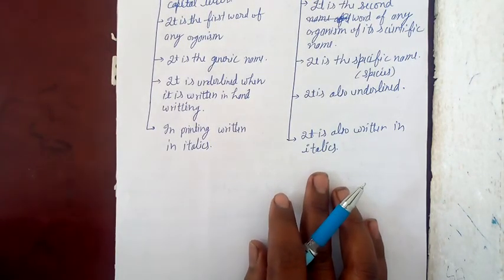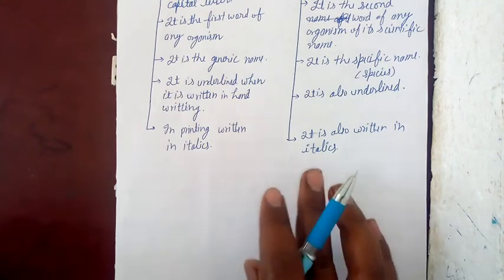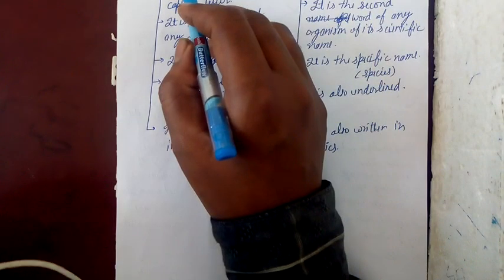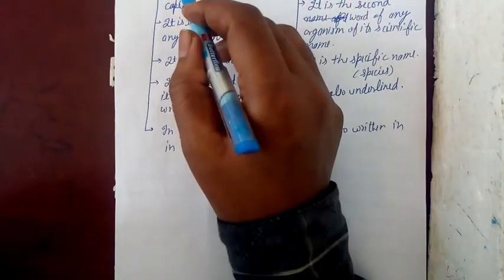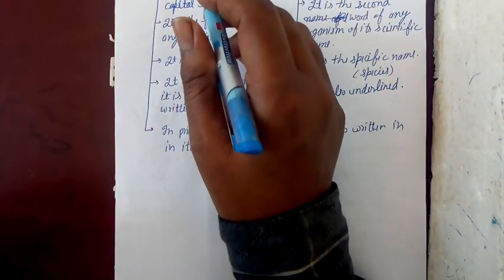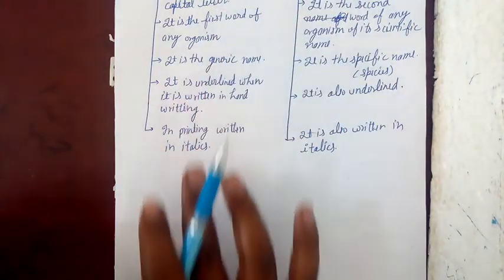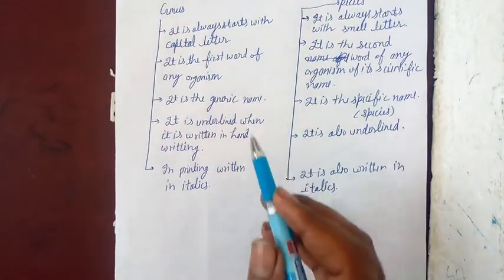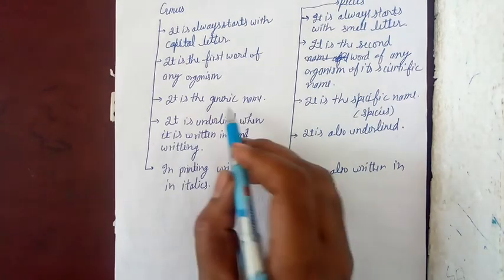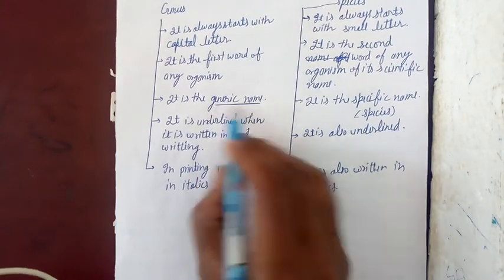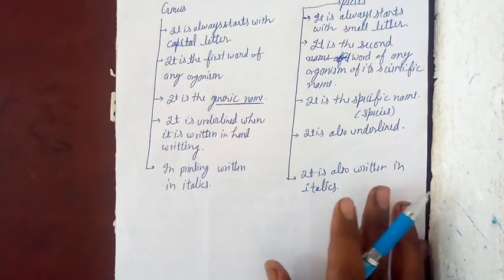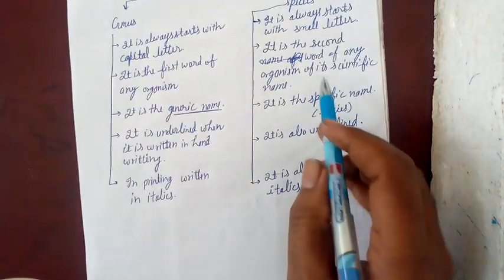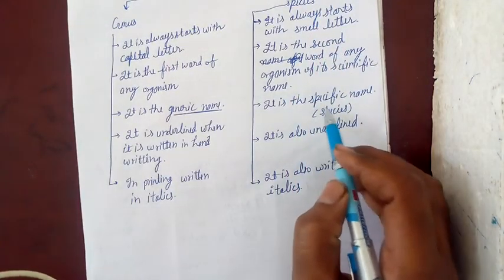The first part is called the genus, which can also be called the generic name. And the second part, species, is also called the specific name.